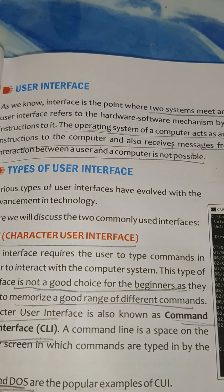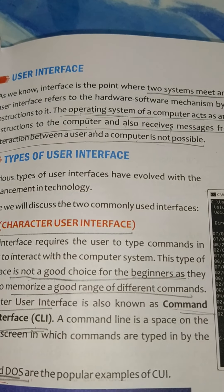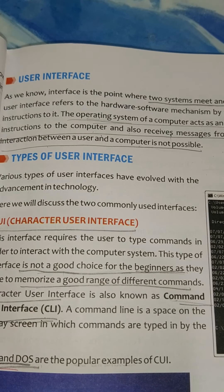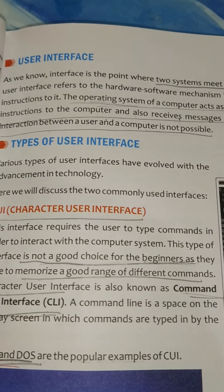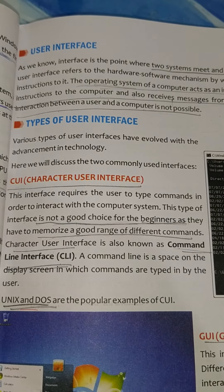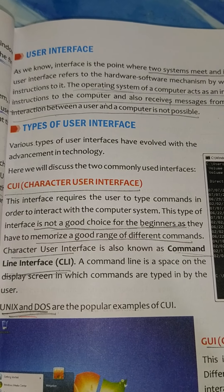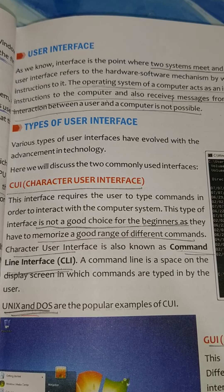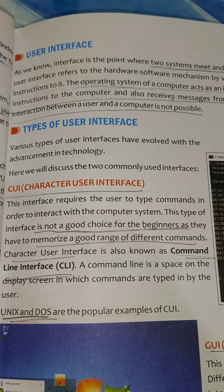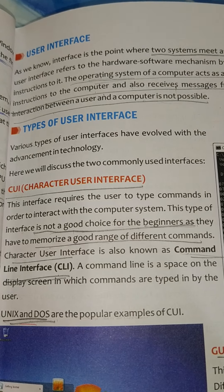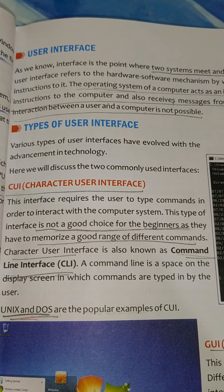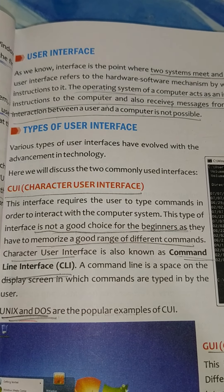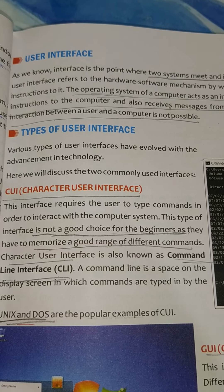Without the operating system, interaction between user and computer is not possible. If you don't load the operating system in the computer, it is just like a box. So if there is no interface between a computer and a user, there is no relation between them. If you want to interact with the computer, you must have one interface — and that interface is known as the operating system.